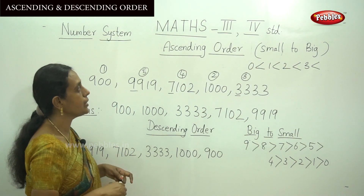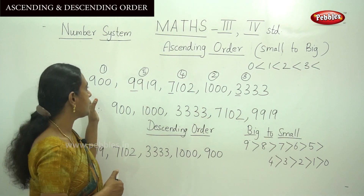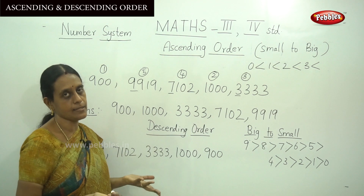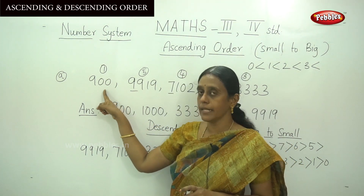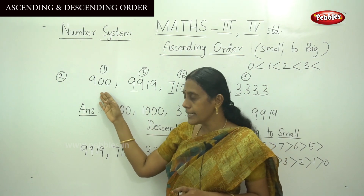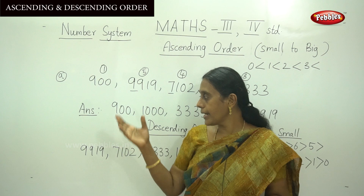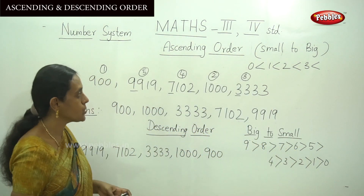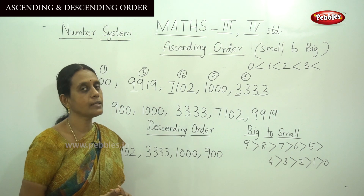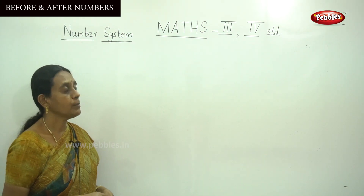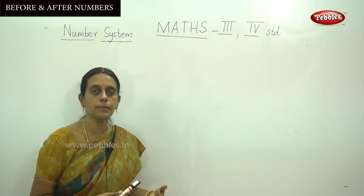Similarly, for 6-digit numbers, we can do the same — count the digits and arrange in ascending or descending order. Now let's move on to the next topic: predecessor and successor, that is before number and after number. Pre means before and successor means after.